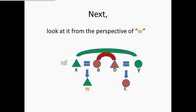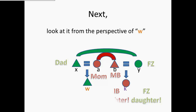Looking at it from the perspective of W: X is his father, and Y is the father's sister, so K is his father's sister's daughter. But if we look at the relationship between W and K through W's mother, A — A is his mom, B is his mother's brother — then K is the mother's brother's daughter. So again we find that she's a bilateral cross cousin to W: she's simultaneously the mother's brother's daughter and the father's sister's daughter. They stand in that bilateral relation to each other, which makes them bilateral cross cousins.